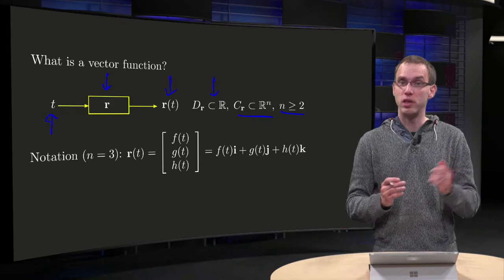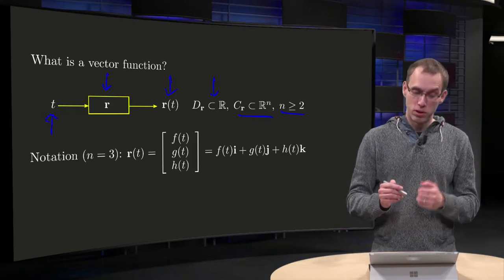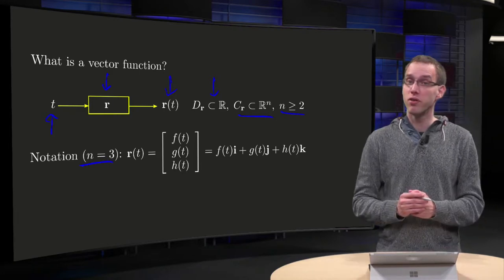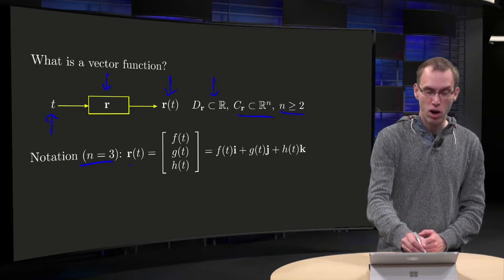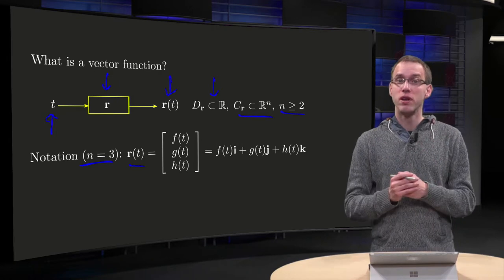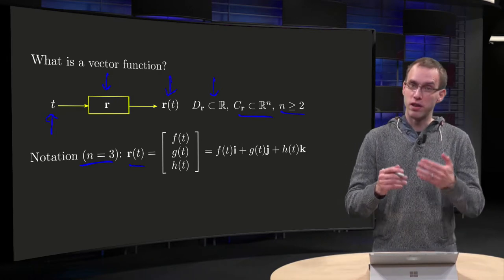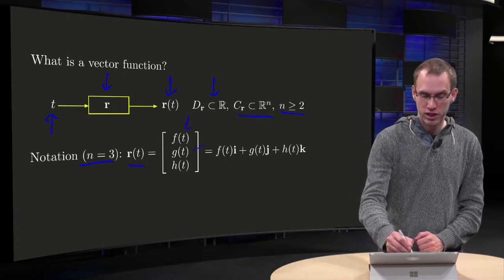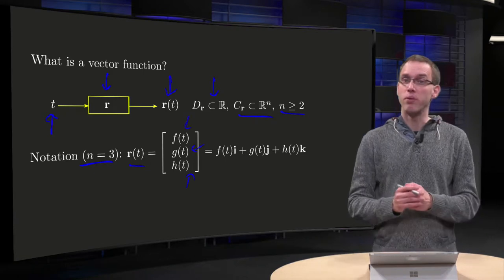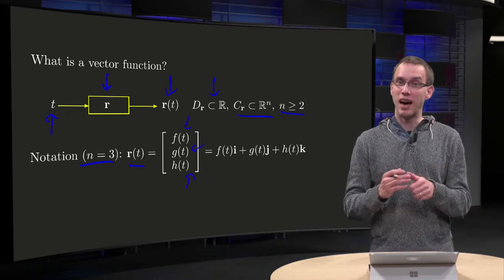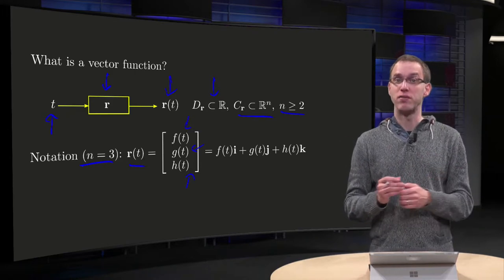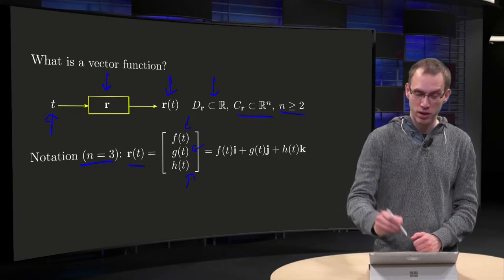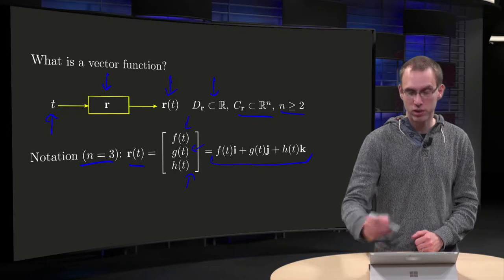In our examples we will usually take R² or R³. So let's introduce some notation. In the n equals 3 case, our r of t, so our output, will consist of, in this case, three components, say f, g, and h. And we can also write it in one line if we use the notation i, j, and k, where i is the vector (1,0,0), j is (0,1,0), and k is (0,0,1), so we can also write our vector function like this.